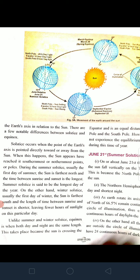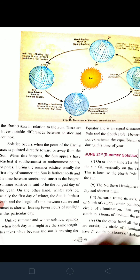June 21 is said to be the longest day of the year — that is the summer solstice. On the other hand, during the winter solstice the Sun is farthest south, the time between sunrise and sunset is shorter, and it is the longest night of the year — that is December 21.